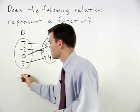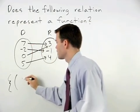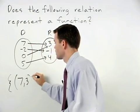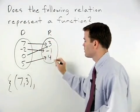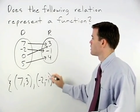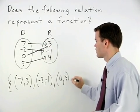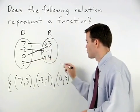So we have the following points: (7, 3), (negative 2, negative 1), (0, 3), and (5, 4).